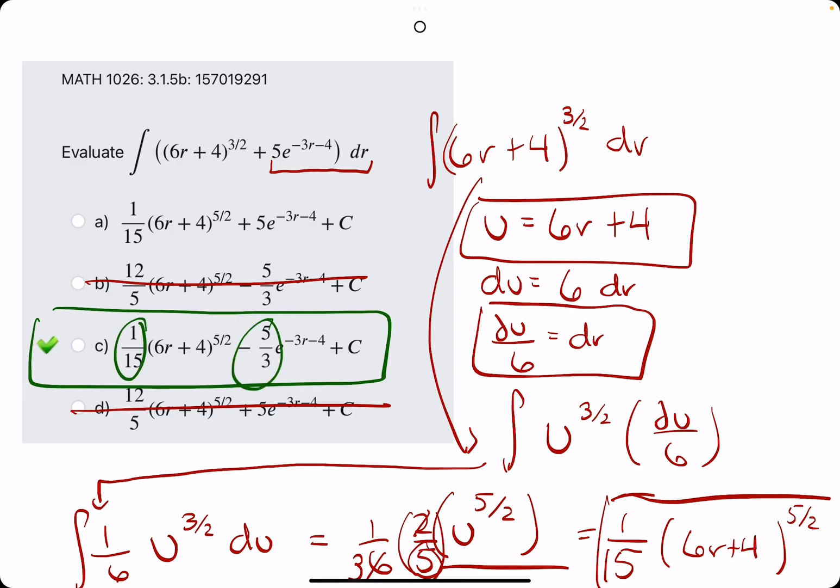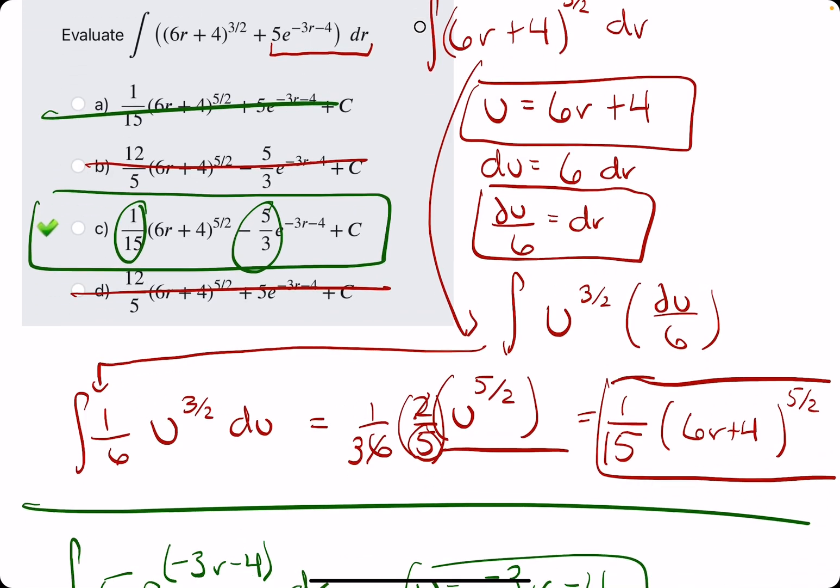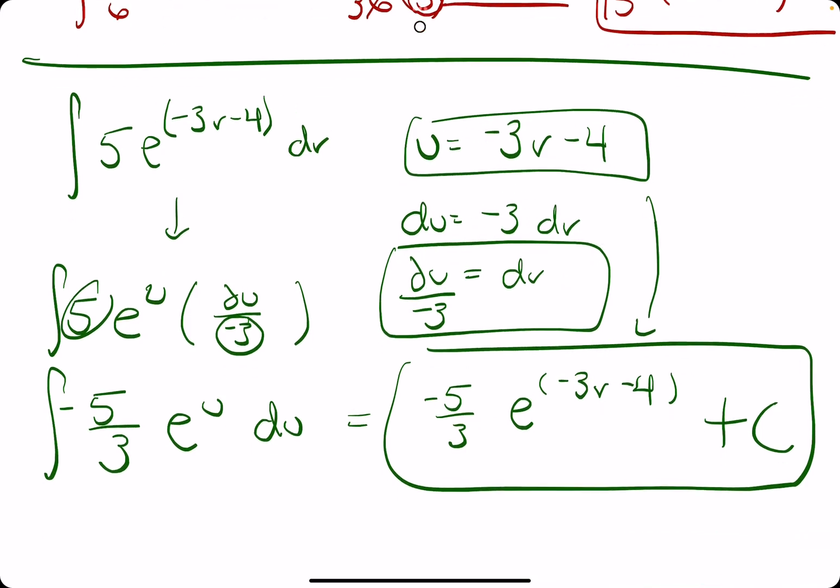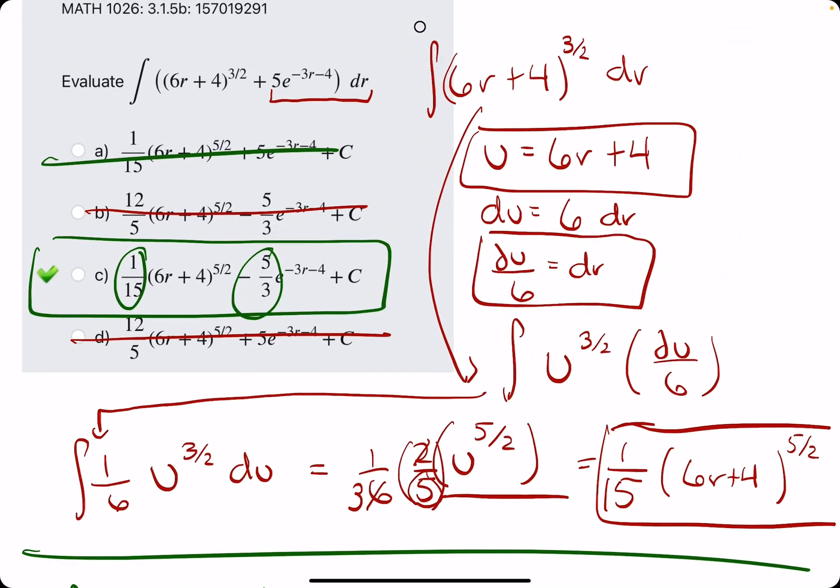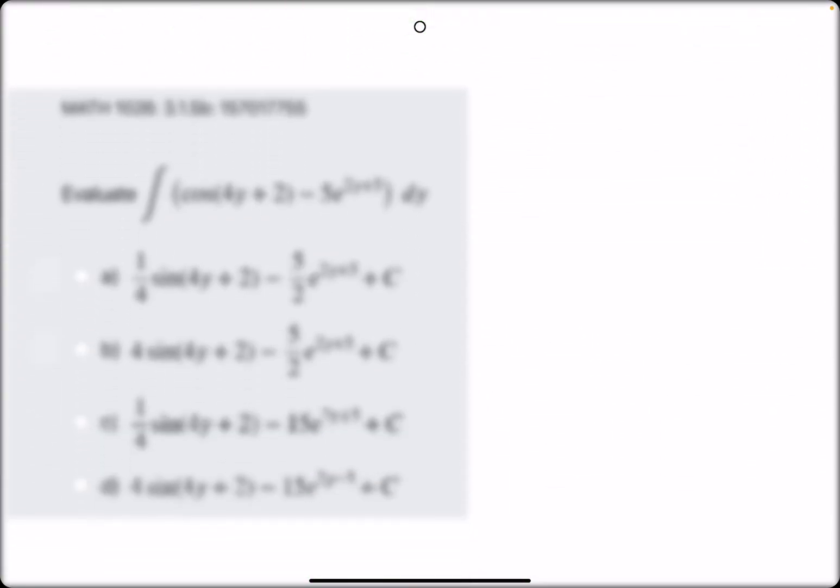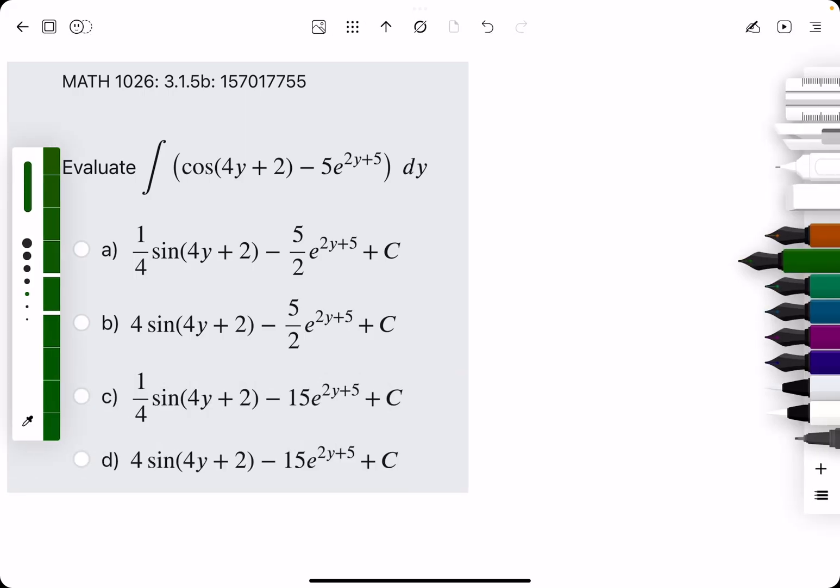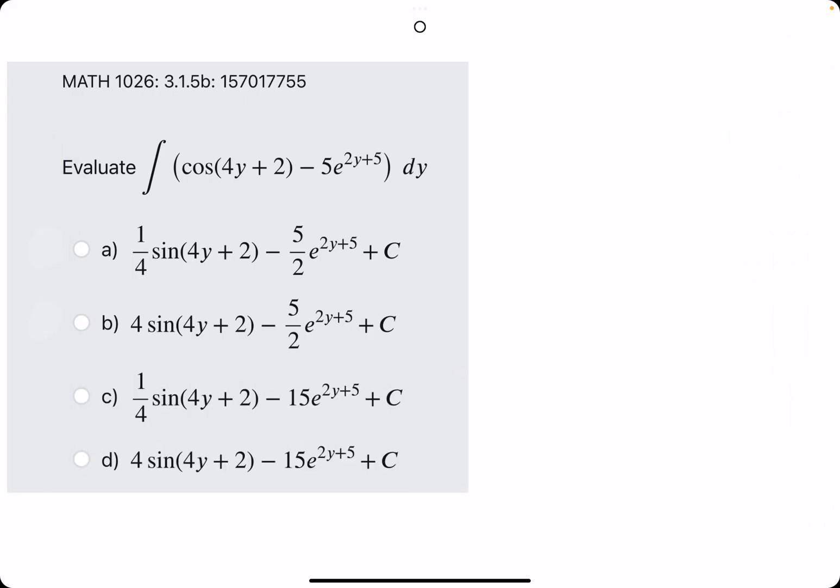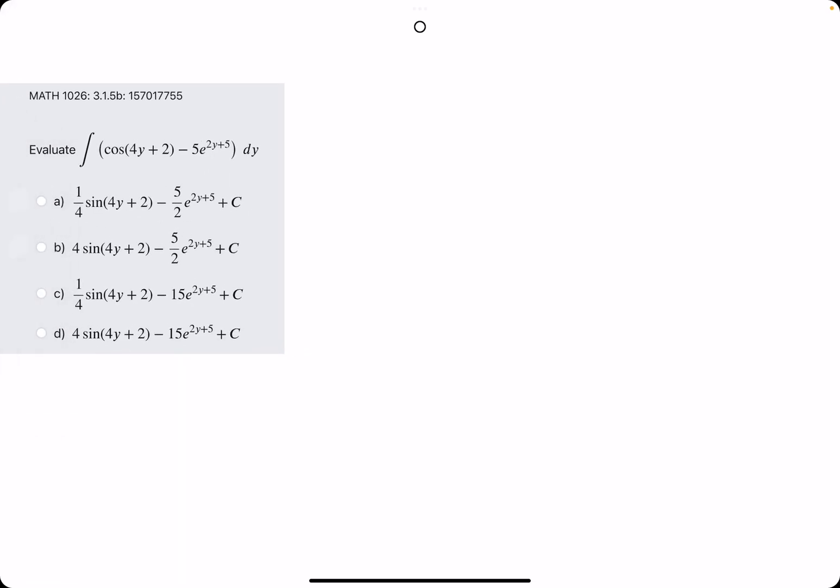So it looks like option C is our answer. 1/15, negative 5 thirds. And that's it. All the other stuff should match. I hope this makes some sense. Let's go ahead and work out one more example as fast as we can. Let's see if I can squeeze it all in.